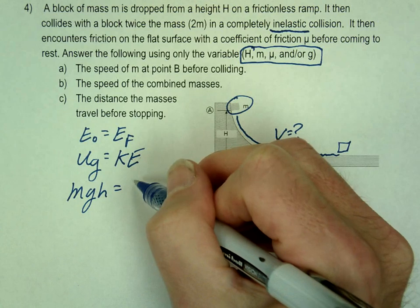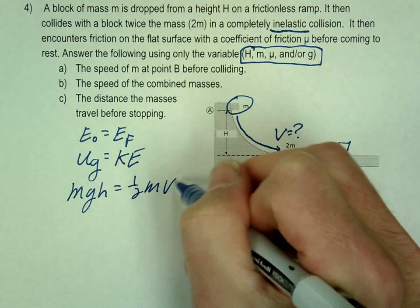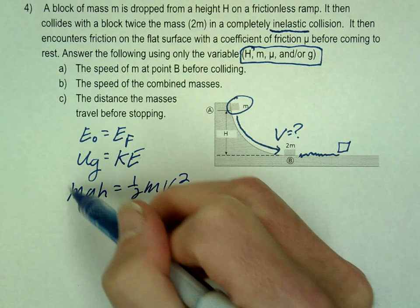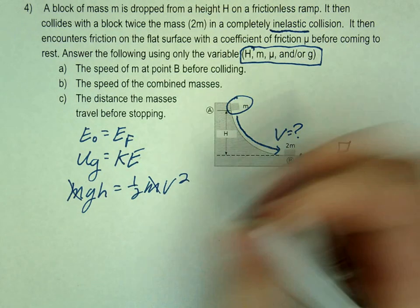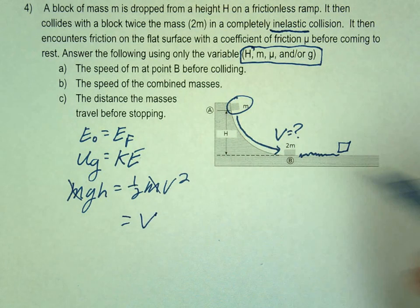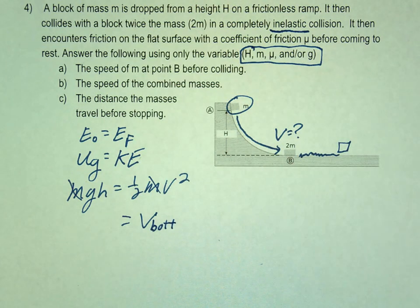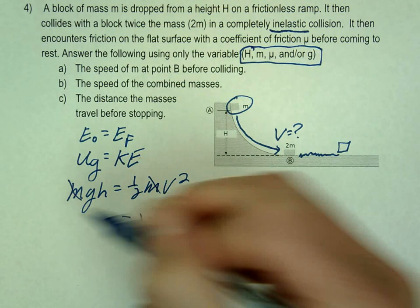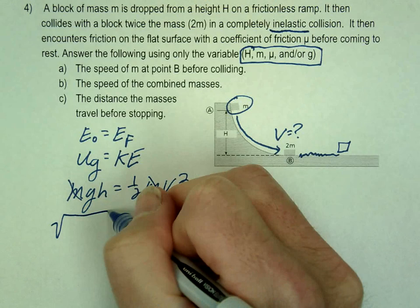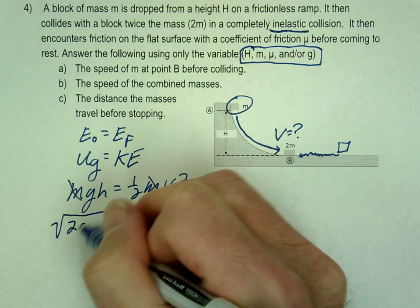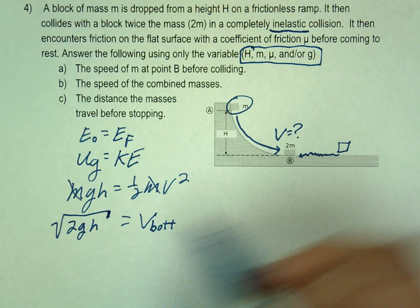So we'll go mgh equals 1 half mv squared. Masses cancel. Solve for v. So v, let's call this v bottom, because we're going to have two v's. So the v at the bottom is going to be square root of 2gh.